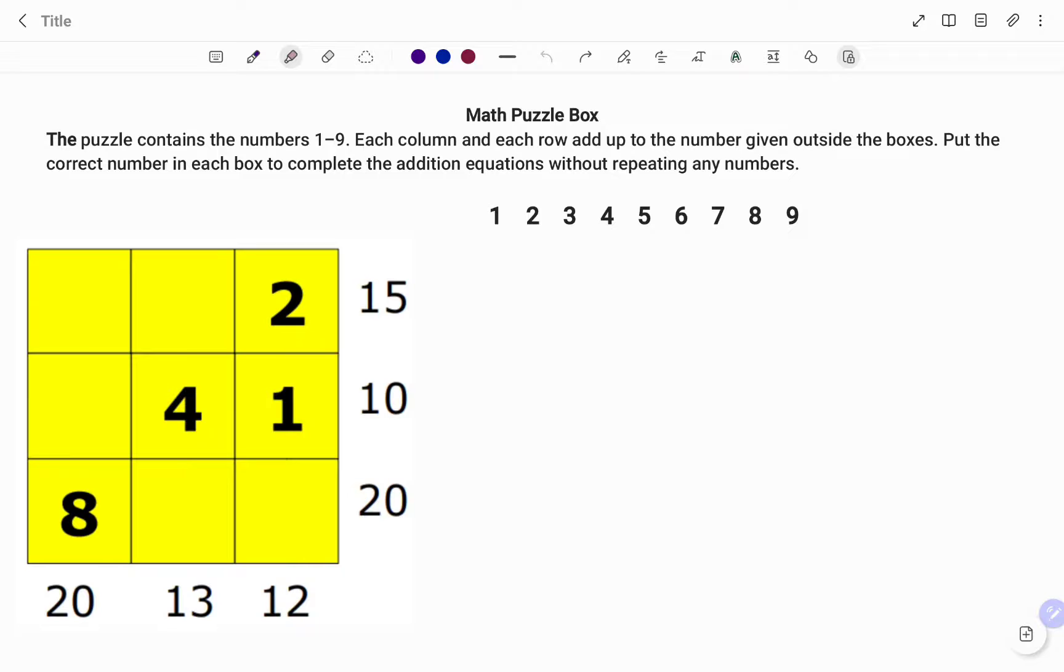The first point to note is we are not going to repeat any number from 1 to 9. So the first step is to strike out all the numbers used already in the box.